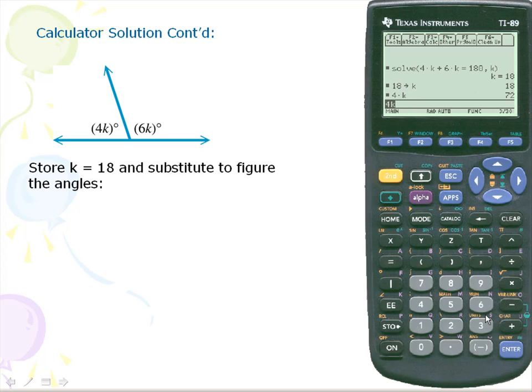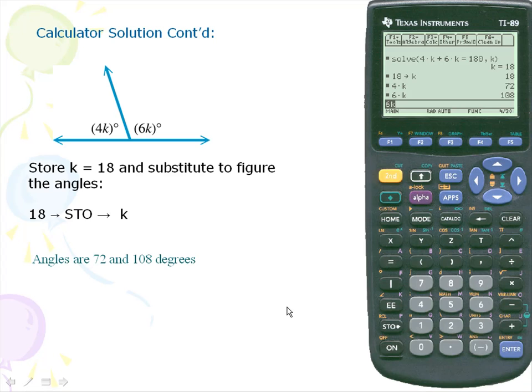And we can see that that's 72. And 6 times k gives us 108. So the two measures are 72 and 108.